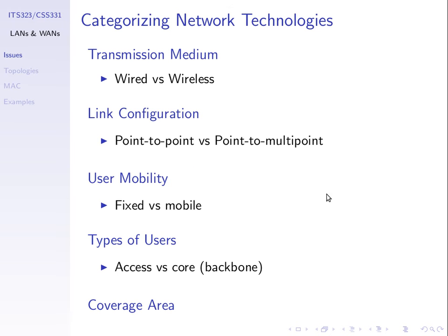Let's try to categorize networks. There are many different types of computer networks in use, and when we want to compare and talk about them, we can classify them in different ways. We can classify networks based upon the transmission medium — is it a wired network or a wireless network? We'll list some examples of each and talk about the trade-offs between wired and wireless networks.